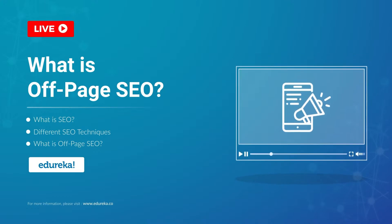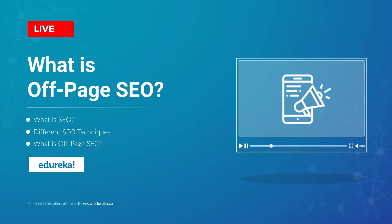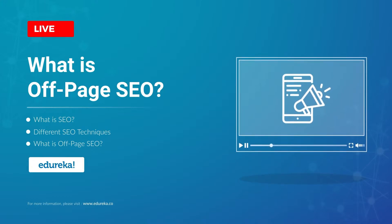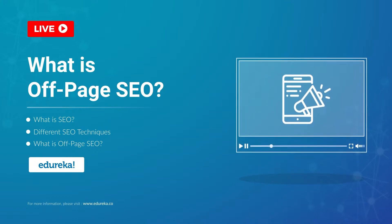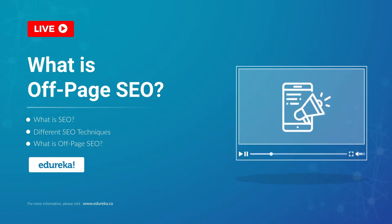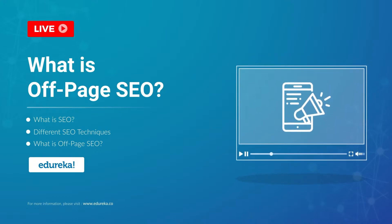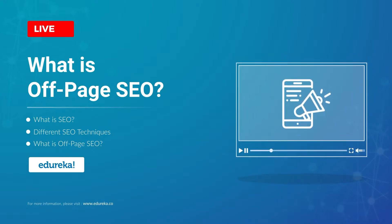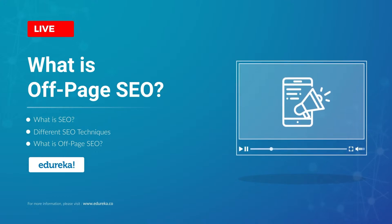Search engines like Google use complex algorithms to determine the ranking of your website on the search engine result pages. One way to increase traffic is by optimizing your website, which is majorly based on the content present on the page. This video will mainly focus on off-page SEO.